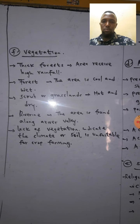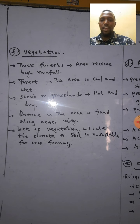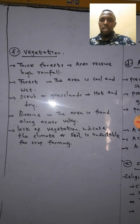Vegetation types can also be read from a map. Thick forest indicates the area receives high rainfall. Forest indicates the area is cool and wet, mostly highlands. Scrub or grassland indicates the area is hot and dry. Riverine vegetation is found along rivers. A lack of vegetation indicates the climate or soil is unsuitable for crop farming.